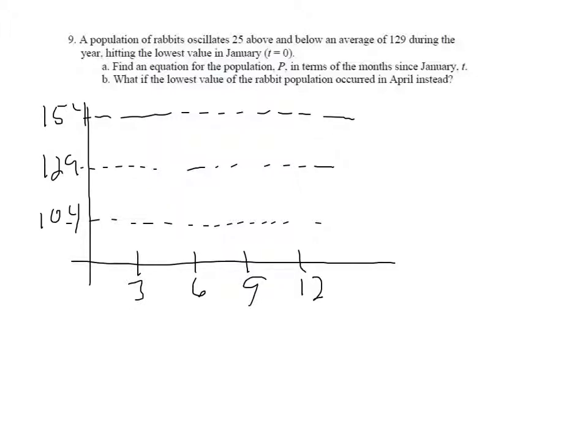The lowest point happens in January, and then it hits the average 3 months later, maxes out 6 months later, back down to the average, back down to the low point. So I'm seeing a reflected cosine function.